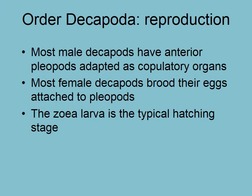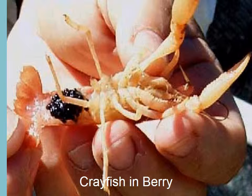When you look at the underside of the tail of a decapod, the pleopods closest to the carapace on males are adapted as copulatory organs with a groove for sperm to be deposited. Most females have branched pleopods — a swimmerette-type section plus a branch to attach eggs to. You've probably seen a crayfish 'in berry,' where the eggs are attached and kept underneath the tail for protection — a form of parental care.